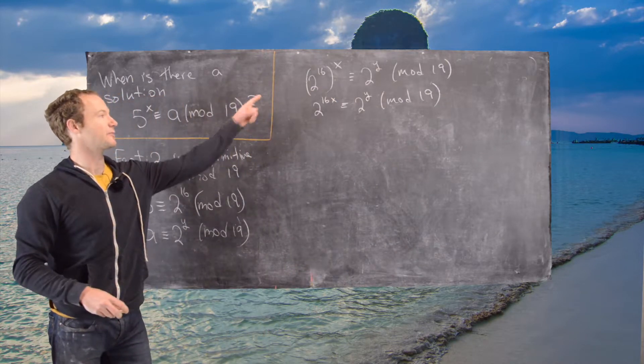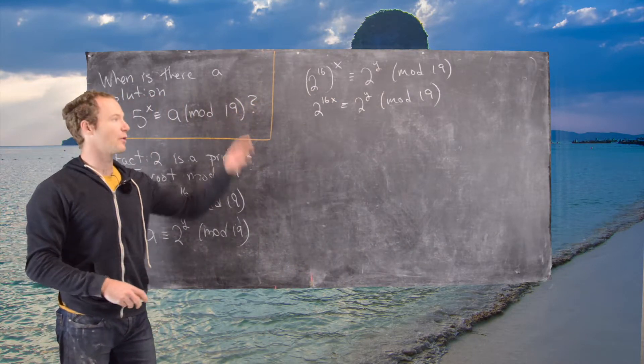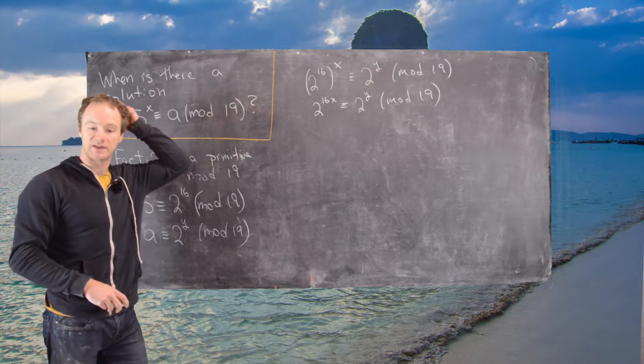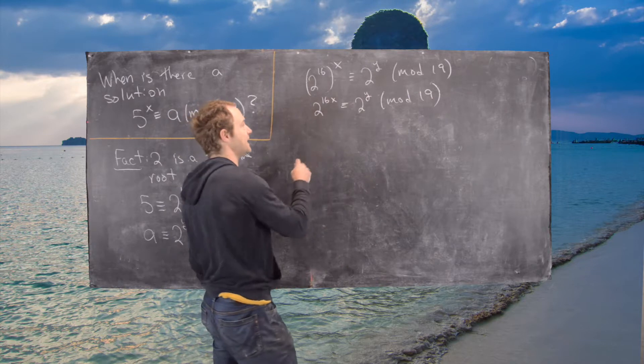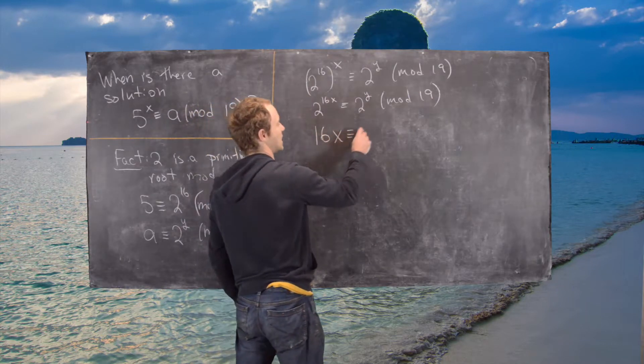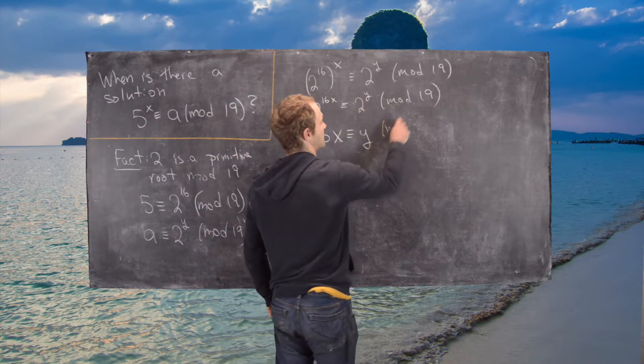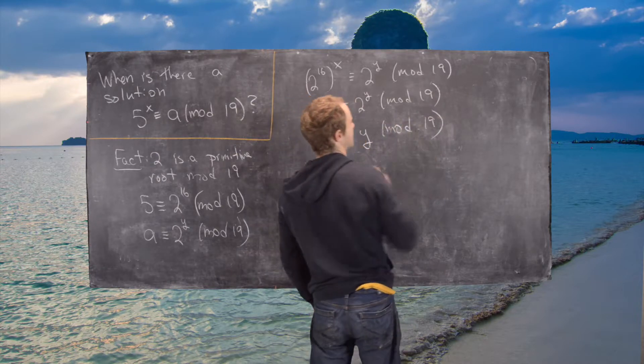But now we can bring the exponents down, but we won't be working mod 19 anymore. In this case, we'll be working mod 18, which is phi of 19. So we get 16x is congruent to y mod 18.